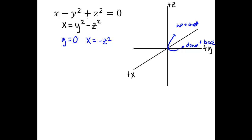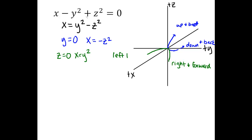When I plug in z equals zero, I will get x equals y squared, which is also a parabola. That one, however, is in the xy plane and will open in the positive x direction. So I have this right-hand side which is coming towards us and to the right, and then the other part that's going to the left and forward.